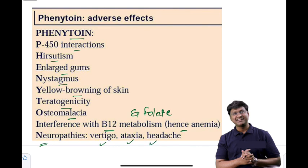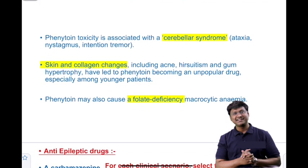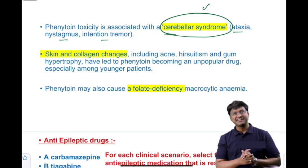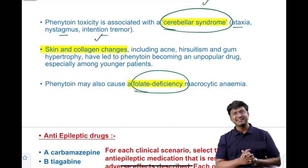The reason for vertigo and ataxia is that phenytoin is associated with cerebellar syndrome, which causes ataxia, nystagmus, and intentional tremors. Skin and collagen changes include acne, hirsutism, and gum hypertrophy. Phenytoin also interferes with B12 and folate metabolism, which is why the individual can develop macrocytic megaloblastic anemia. That covers the adverse effects related to phenytoin.